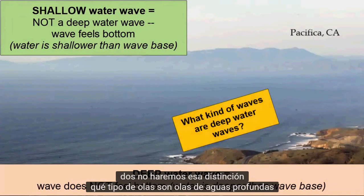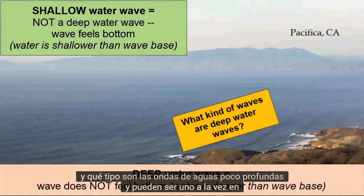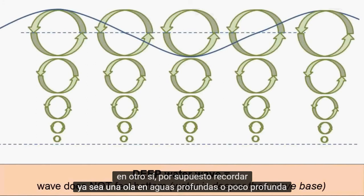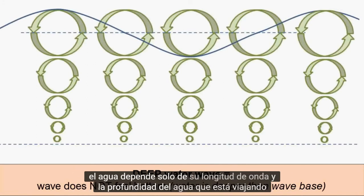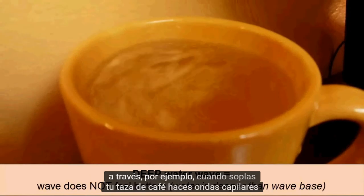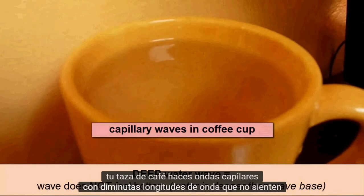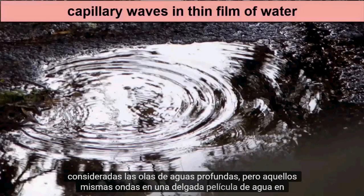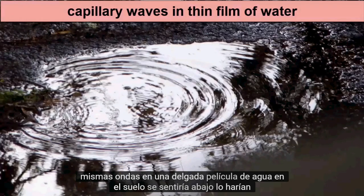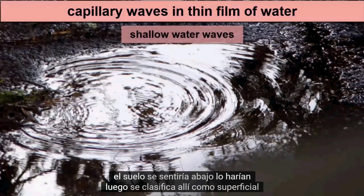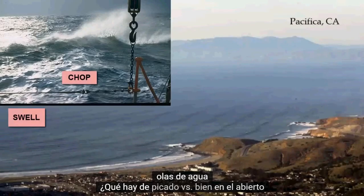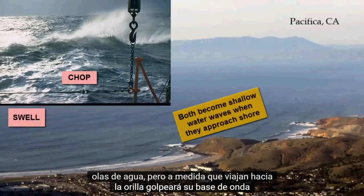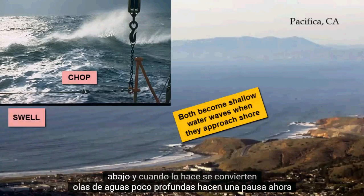What kind of waves are deep water waves and what kind are shallow water waves — and can they be one at one time and another at another? Yes, of course. Remember, whether a wave is deep water or shallow water depends only on its wavelength and the depth of water it's traveling through. For example, when you blow on your coffee cup, you make capillary waves with tiny wavelengths — they do not feel the bottom of the coffee cup, so they are considered deep water waves. But those same waves in a thin film of water on the ground would feel bottom and would be classified as shallow water waves. In the open ocean, both chop and swell are deep water waves, but as they travel towards the shore, their wave base will hit bottom and they become shallow water waves.